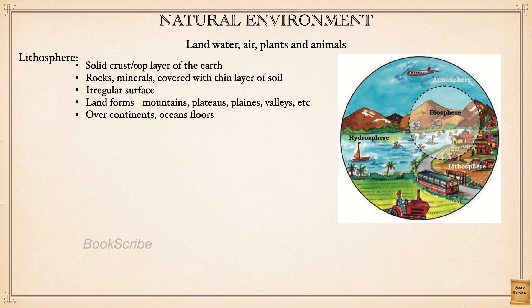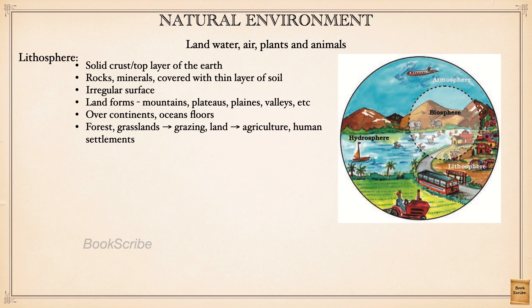The ocean bed alone forms part of the lithosphere, not the water. The lithosphere contains forests, grasslands for grazing, land for agriculture, and places where humans can live. We also have a huge source of minerals like iron and gold on the lithosphere.